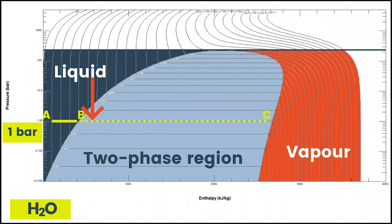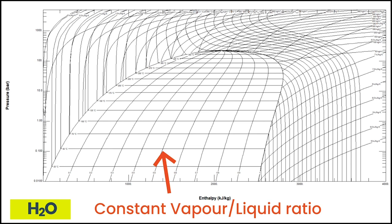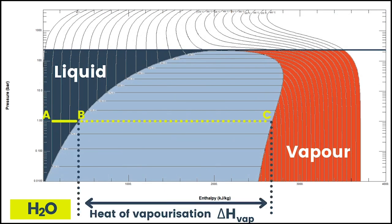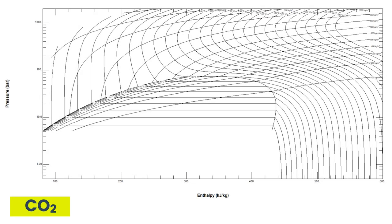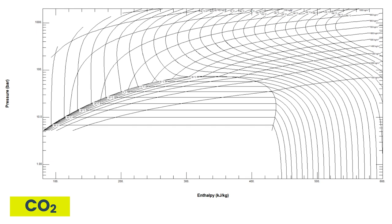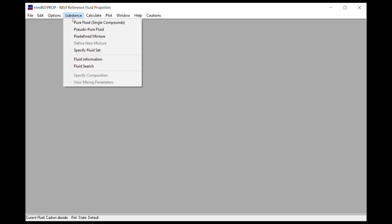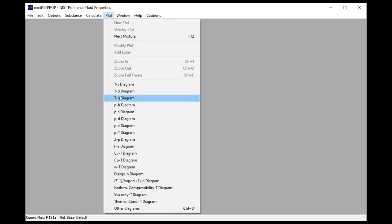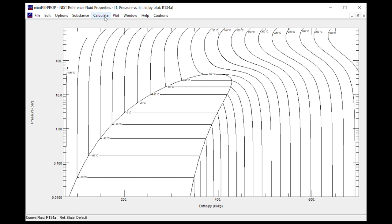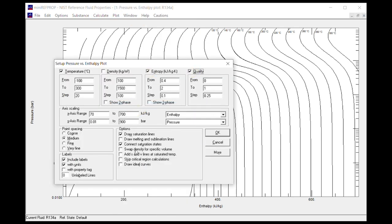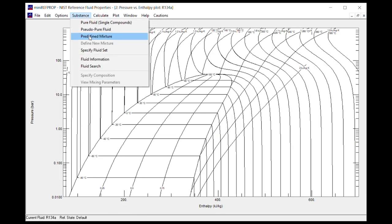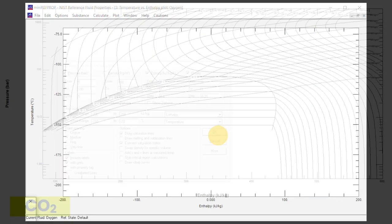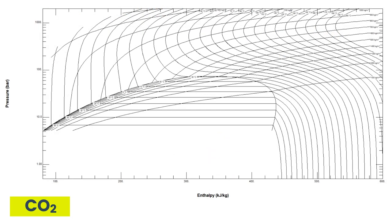I introduced pressure-enthalpy diagrams in my last video and I'm continuing here under the assumption that you've watched it. I have plotted the pressure-enthalpy diagram for carbon dioxide using the NIST Mini REFPROP program, which is free to download from the National Institute of Standards and Technology — link in the description. We need a way of locating ourselves on this diagram.